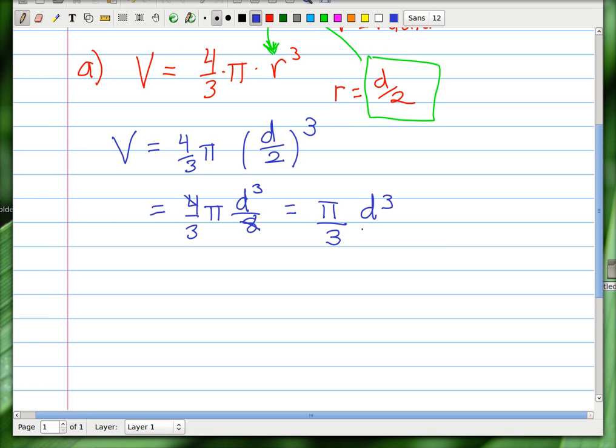You have d cubed over 2. And so this whole thing is the same thing as pi d cubed over 6.